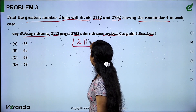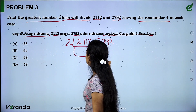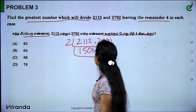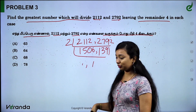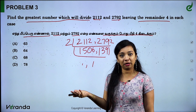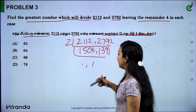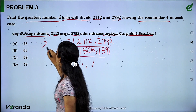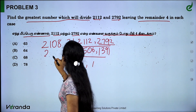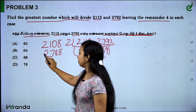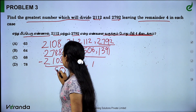We subtract 4 from 2112 to get 2108, and subtract 4 from 2792 to get 2788. Now we find HCF of 2108 and 2788. Computing: 2788 minus 2108 equals 680. Then we find HCF of 2108 and 680. Dividing 2108 by 680 gives remainder, and we continue the process to find the HCF, which equals 680 eventually through these steps.